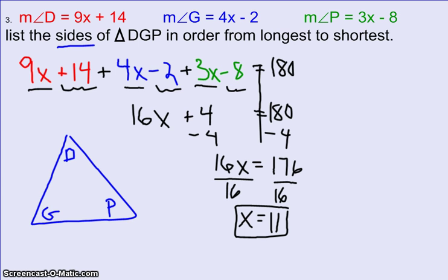And we have to figure out the sides from longest to shortest. Well, let's go ahead and plug in what we know about our angles. So angle D was 9x plus 14. So we'll do 9 times 11 plus 14. It gives me 99 plus 14, which is going to give me 113 degrees. So I know angle D is 113 degrees.